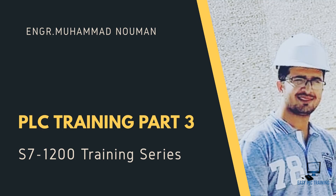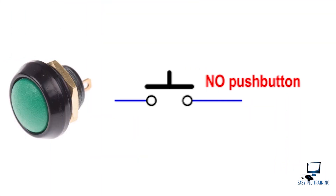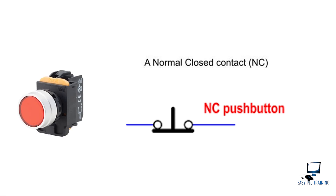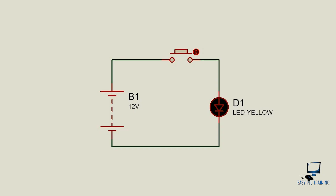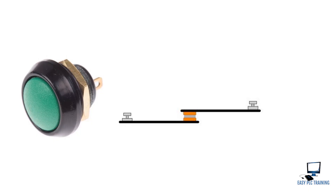Now we will talk about NO and NC type of momentary push buttons. The NO type looks like this and the NC type looks like this. In a NO (normally open) push button, in normal condition we have an open circuit. So whatever device is connected — for example, a light — in normal condition the light would be off because the circuit is open. When we press the button, the circuit completes and the associated device turns on.